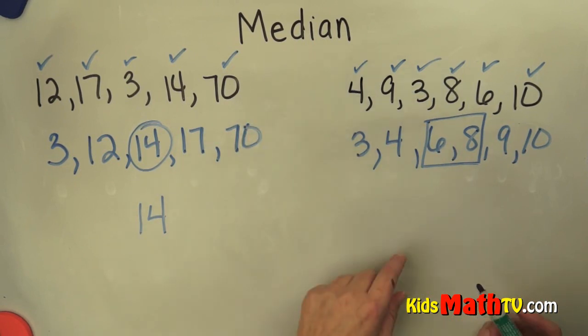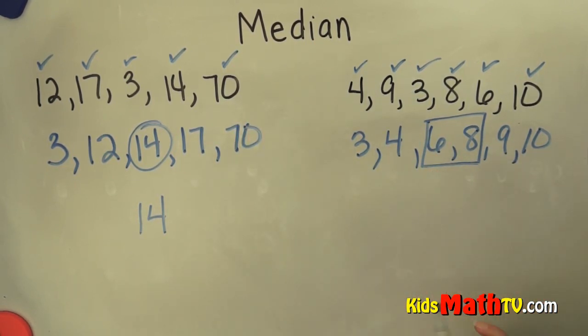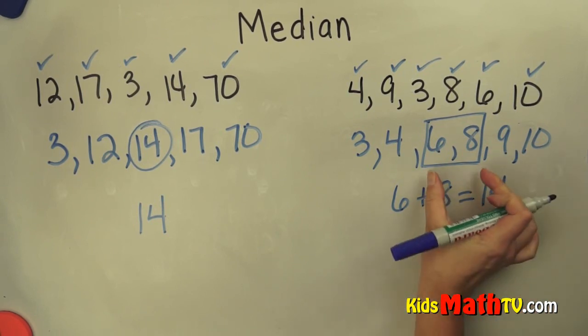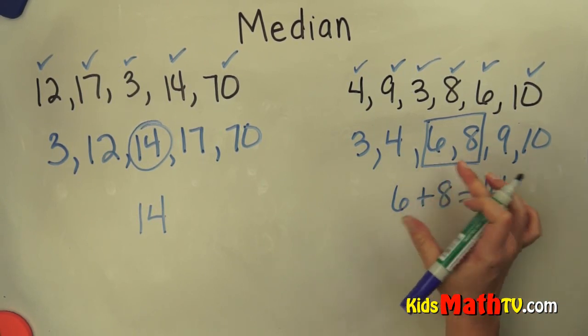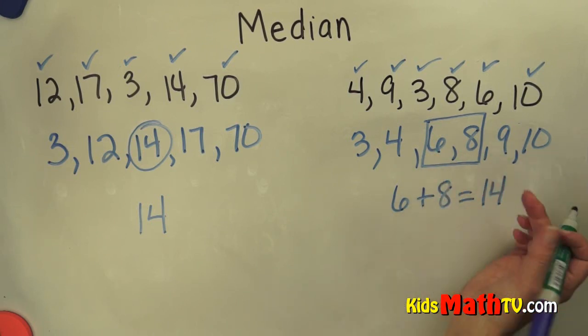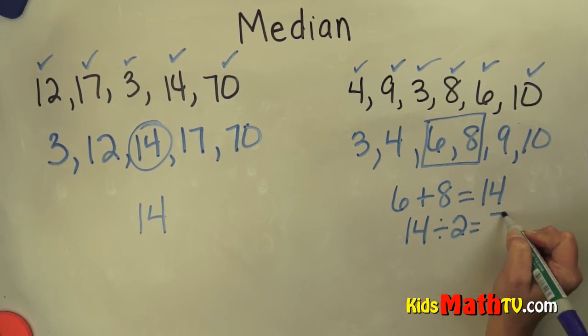So in order to find the median, I have to find the average or the mean of these two numbers. We simply add those two numbers together. 6 plus 8 equals 14. And then we're going to divide by the number of numbers that we added. In this case, it's 2. It's always 2 when you're finding the average of two numbers. So 14 divided by 2 equals 7.